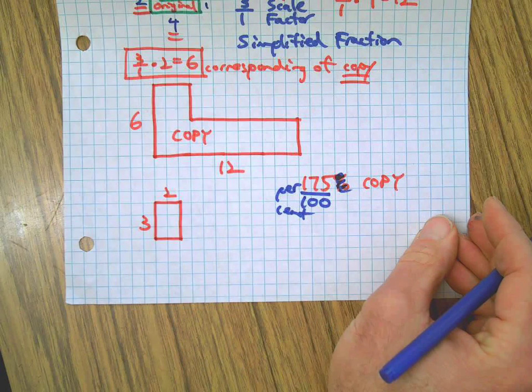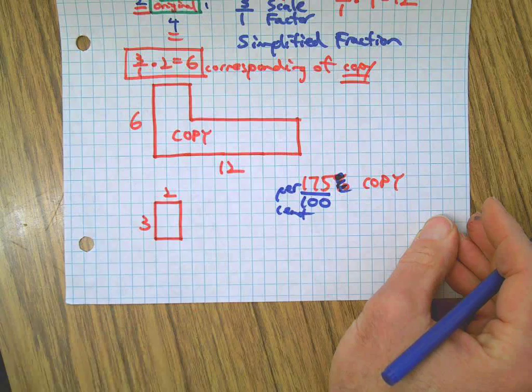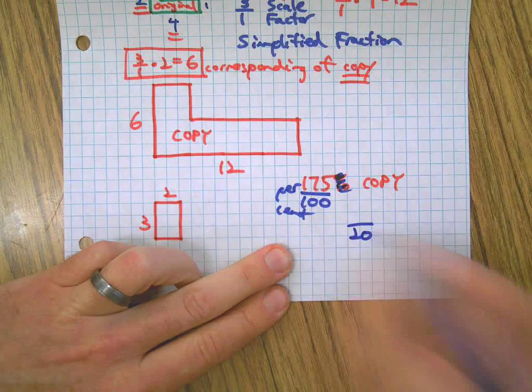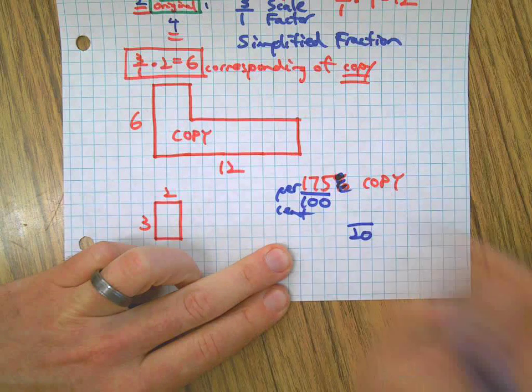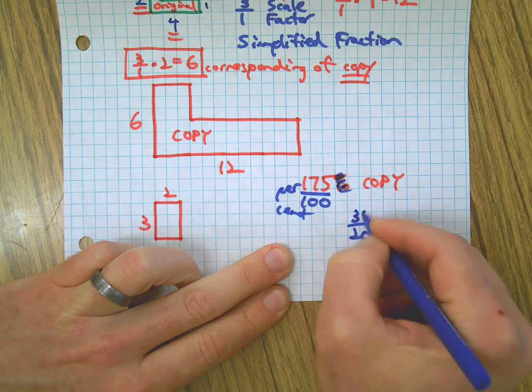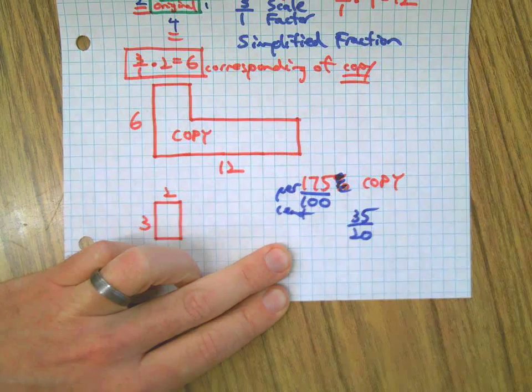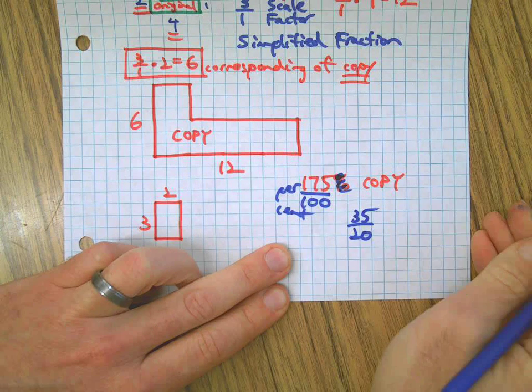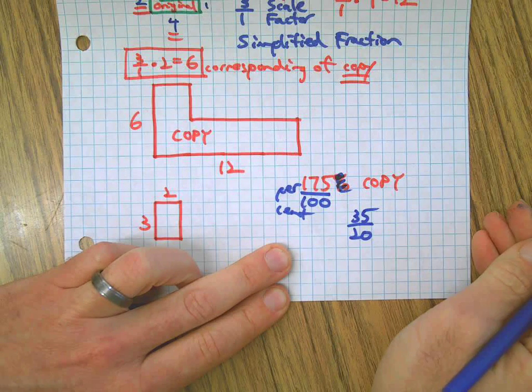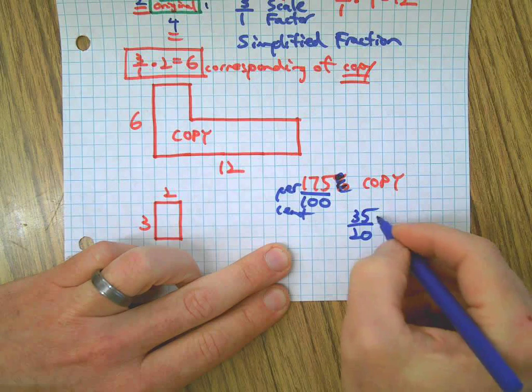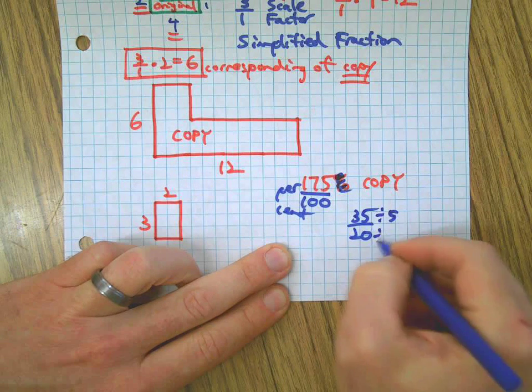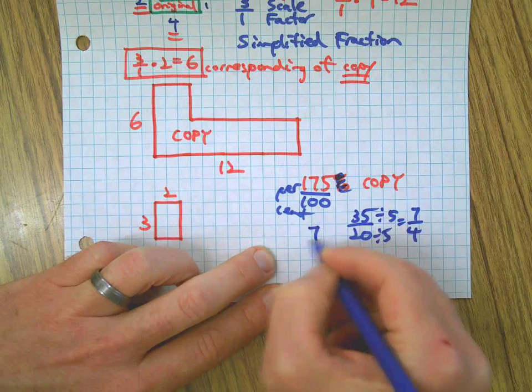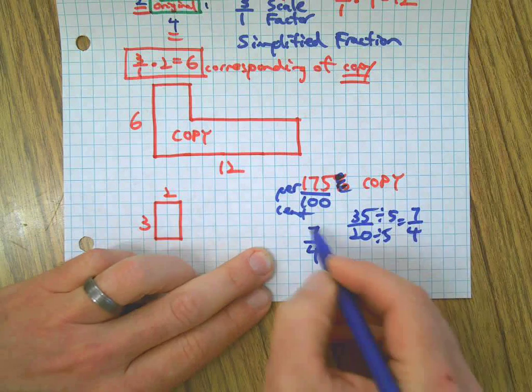We're going to simplify this fraction. I know I can divide top and bottom by five, and I can do that again. Divide by five, divide by five gives me 7/4. So the scale factor here, this is a tricky one, the scale factor is 7/4.